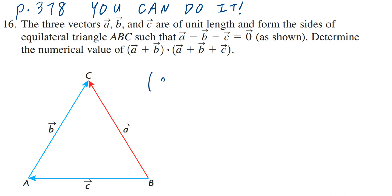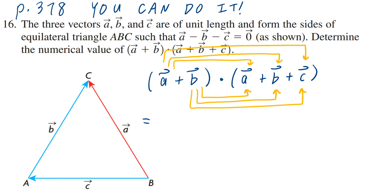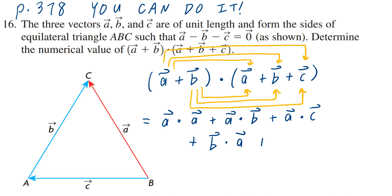Step one: before we think about the diagram and the angles between vectors, we're going to expand this. There are three arrows at the top and three at the bottom to distribute. Taking the first arrow: vector a dotted to vector a, plus vector a dotted to vector b, plus vector a dotted to vector c. Then the bottom arrows give us: plus b dotted to vector a, plus b dotted to vector b, plus vector b dotted to vector c.